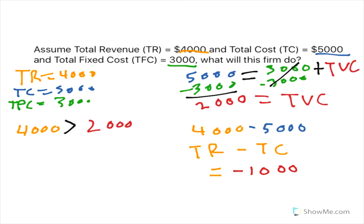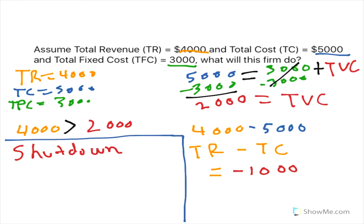Their profits will be negative $1,000. Let's assume they don't take our advice and they decide to shut down instead. If they shut down, they're still locked into the debt they incurred to begin business regardless.